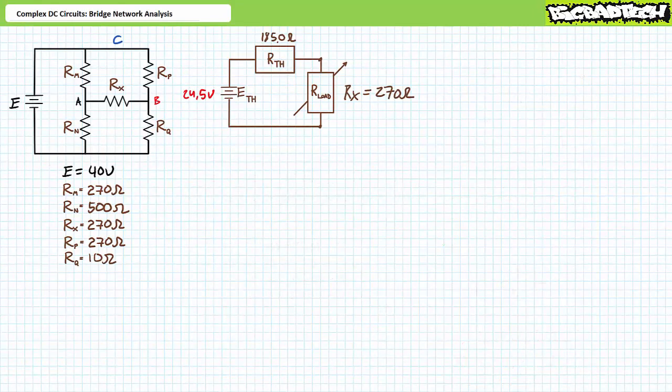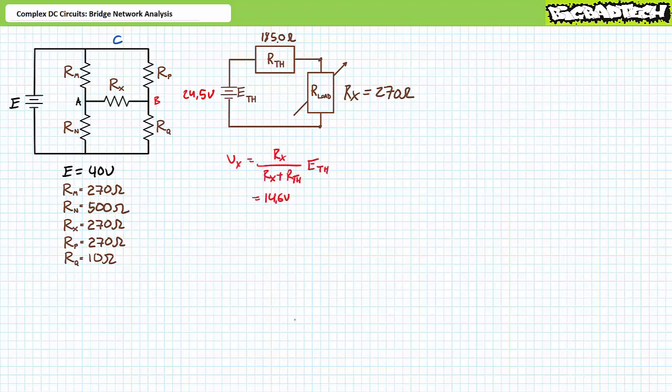The Thevenin equivalent circuit seen by bridge resistor RX is a 24.5-volt source in series with a 185-ohm resistor. This simpler pure series circuit is used to solve for the electrical properties of RX (270 ohms). Applying the voltage divider rule gives VX roughly 14.6 volts, and Ohm's law gives 53.9 milliamps of current — the same results obtained using the delta-to-Y conversion, confirming our answers are correct.